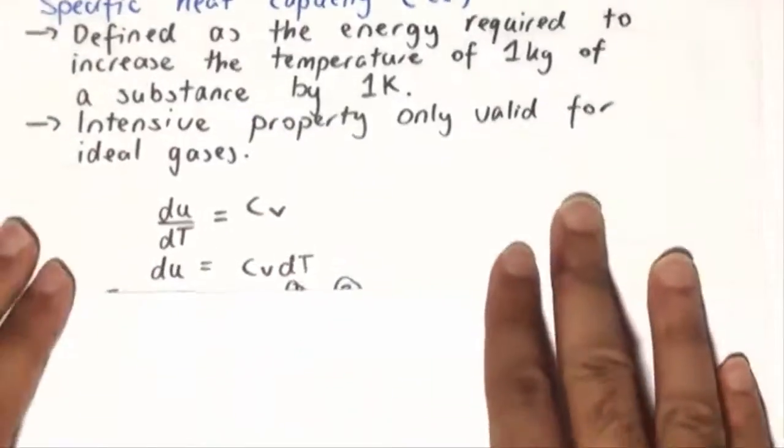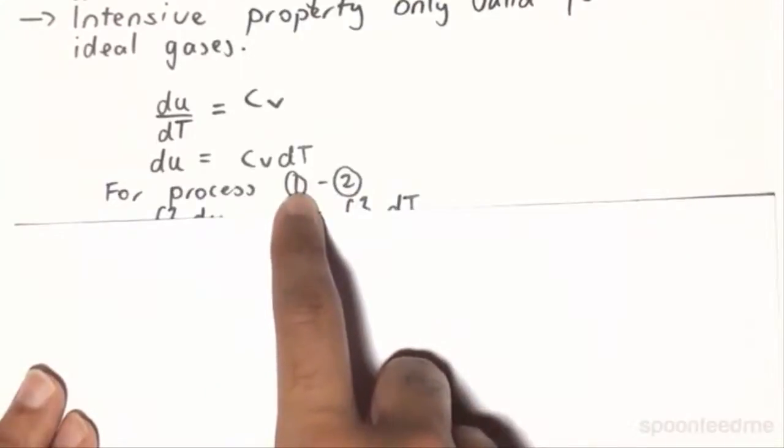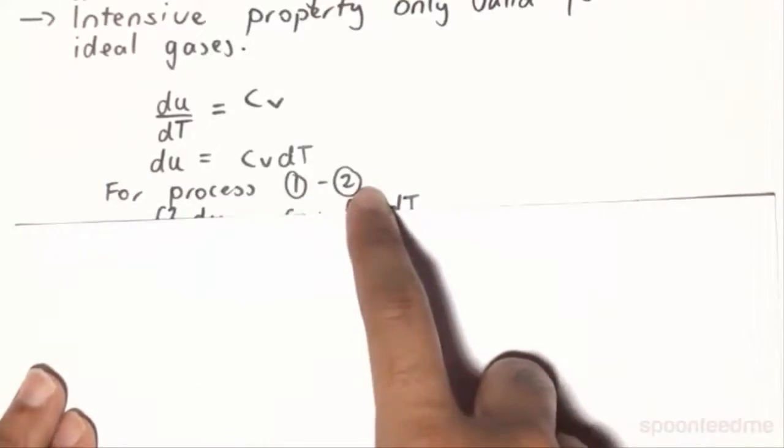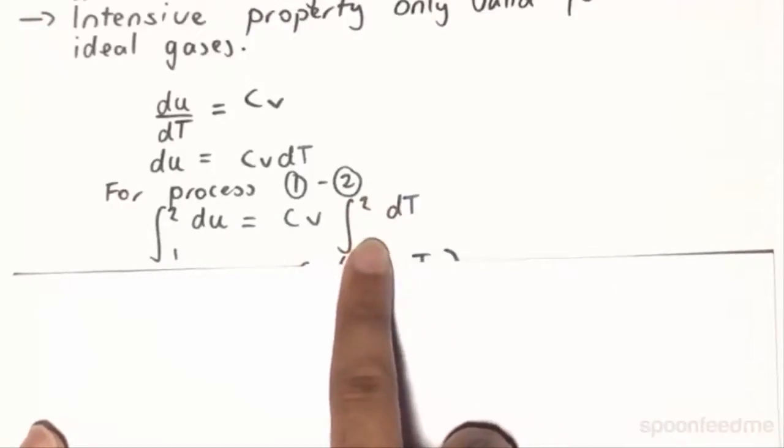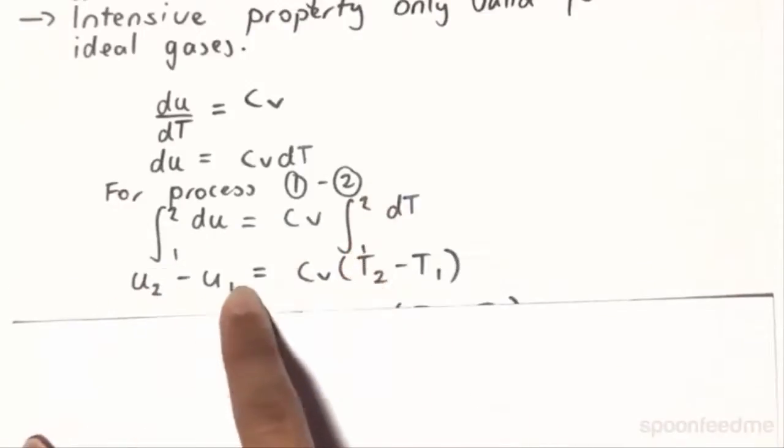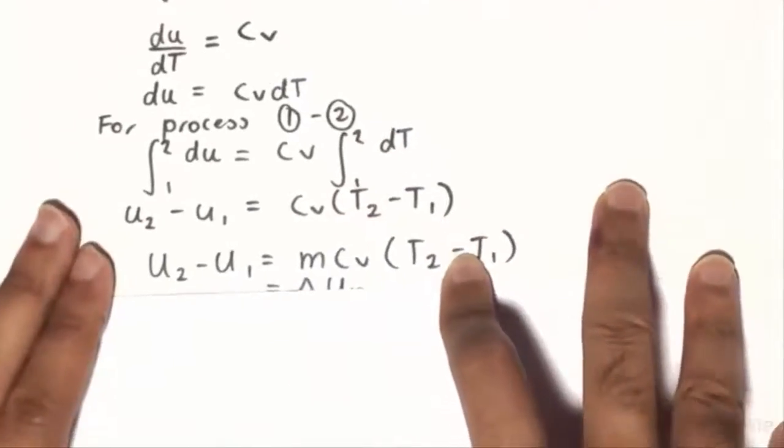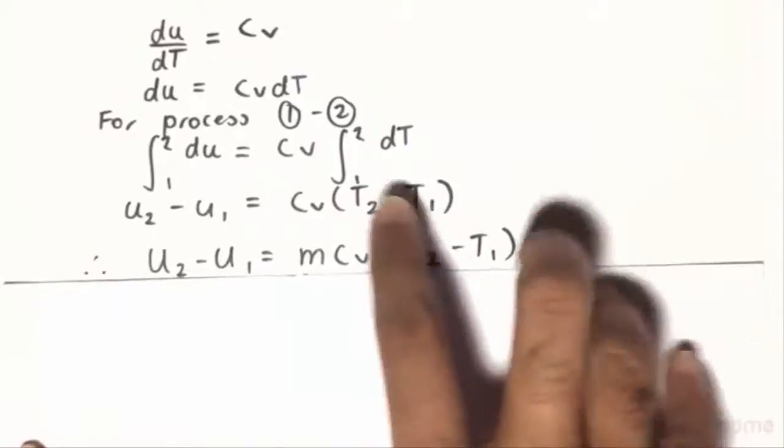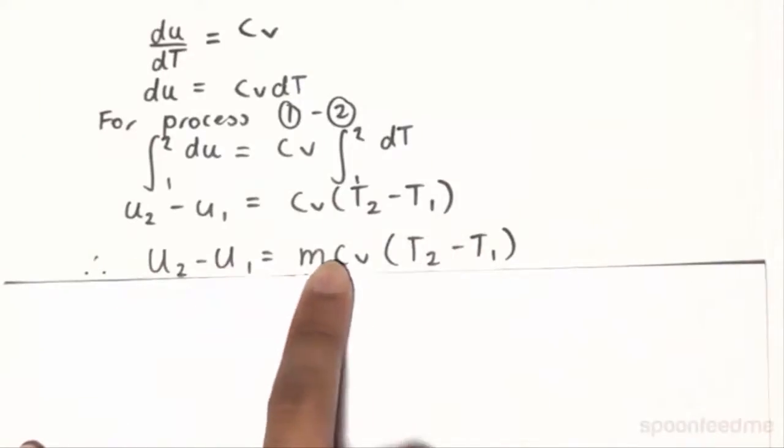And so therefore, if we do a simple calculus and put it for a process 1 to 2, therefore being able to make the integrals definite, we can find that U2 minus U1 is equal to Cv times T2 minus T1. And if you aren't working in specifics, it will be capital U2 minus capital U1 equals M times Cv times T2 minus T1.